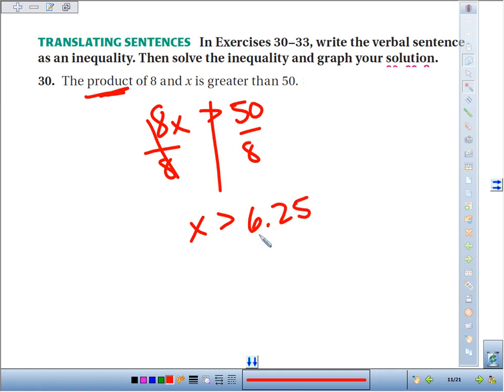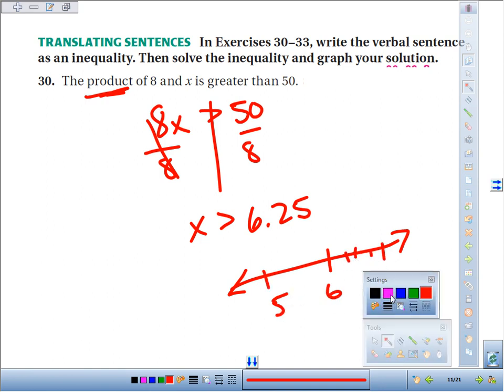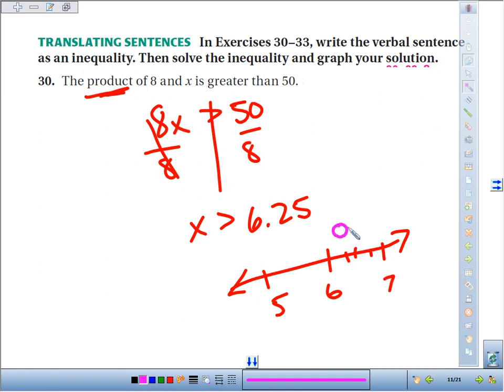Six and a quarter looks right. To graph it, 6, 7, 6 and a quarter right about there. Since it's just greater than, we'd have an open circle. Numbers greater than 6.25 are to the right.